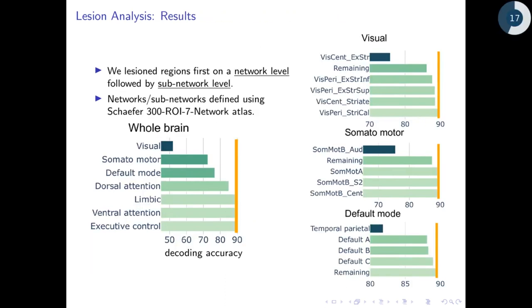In results, we first lesion regions on the network level. In the visual, the orange line in the figure shows accuracy without any lesion. Lesioning the visual, somatomotor and default networks produced the largest drop in decoding accuracy, which shows that these networks are important at differentiating movie stimuli.